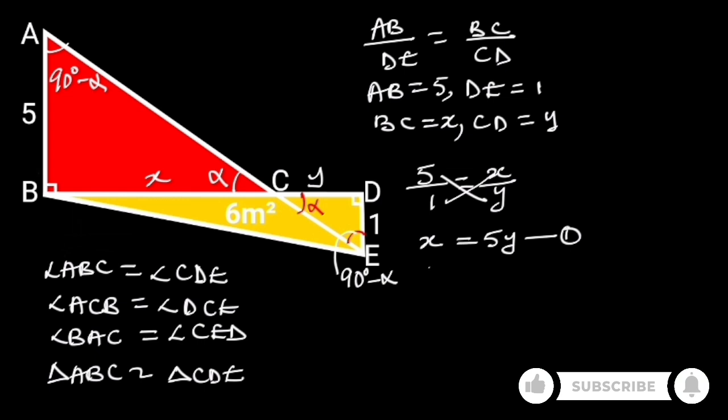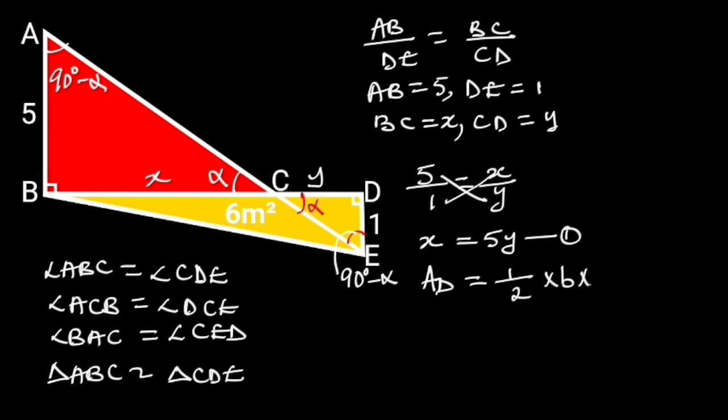Going further, let's recall that the area of a triangle is given as 1 over 2 times base times height. Next, let's consider triangle BDE. In triangle BDE, the base is equal to X plus Y, the height is 1, and the area is 6 square units.